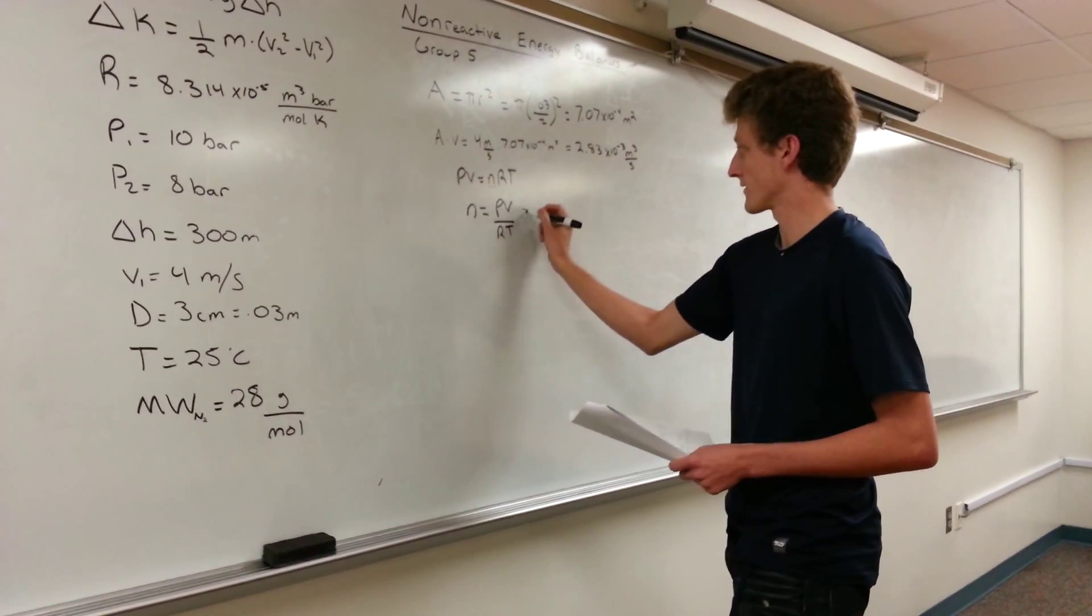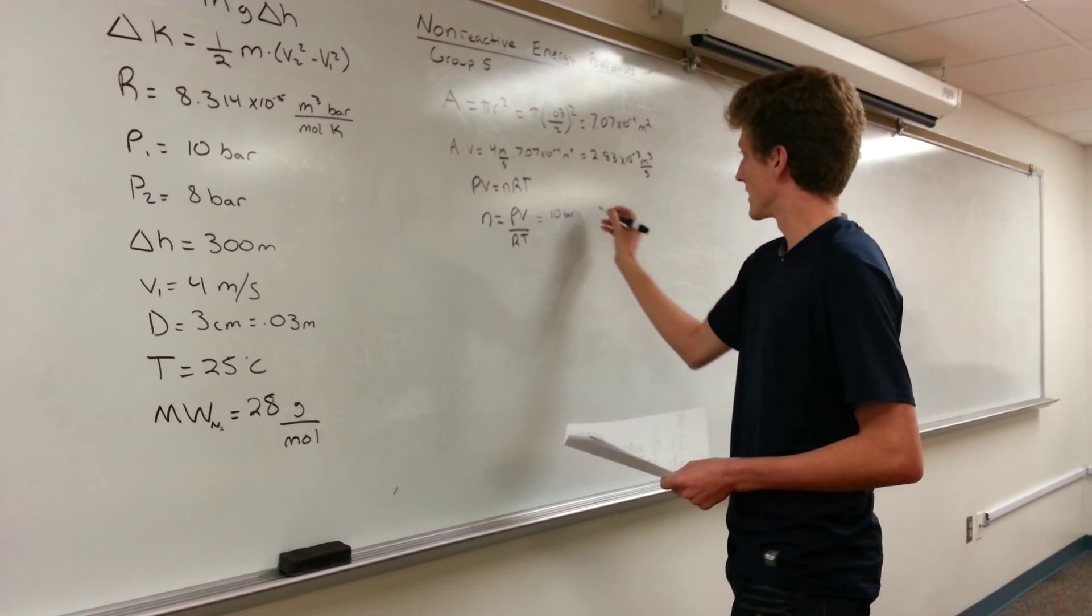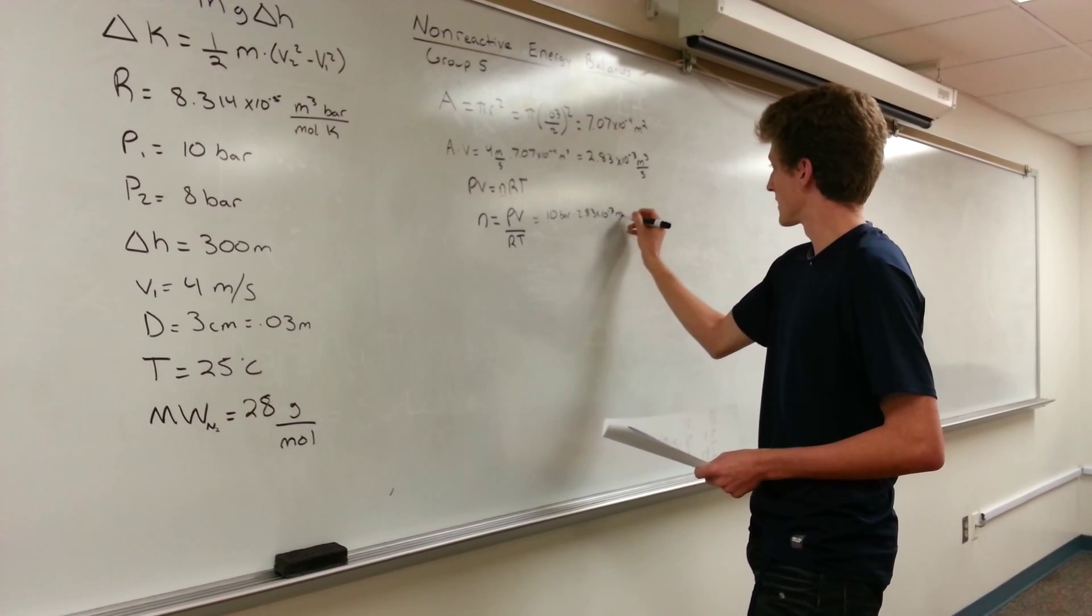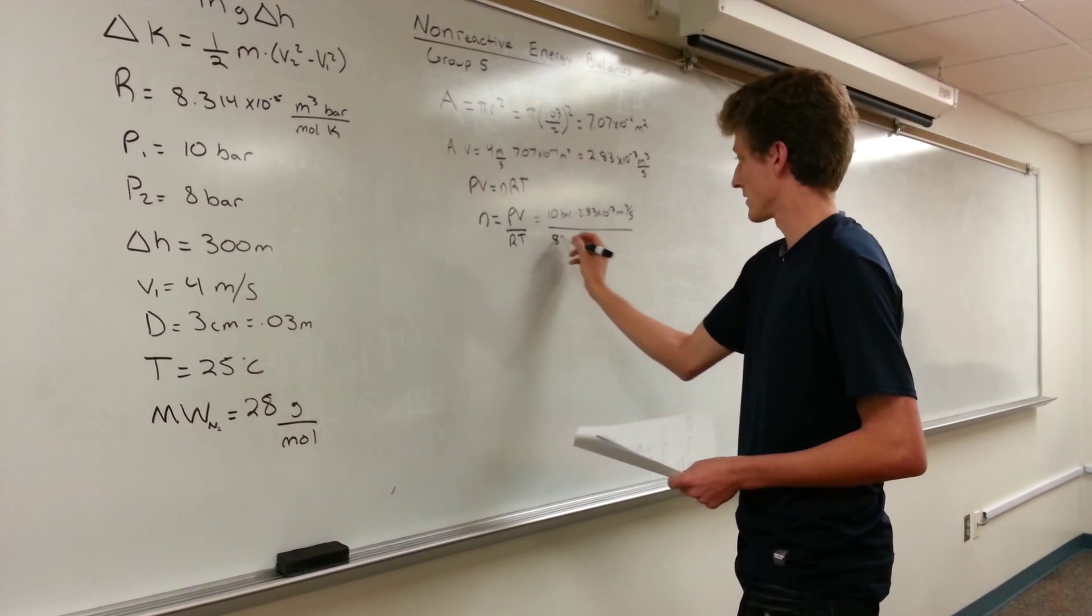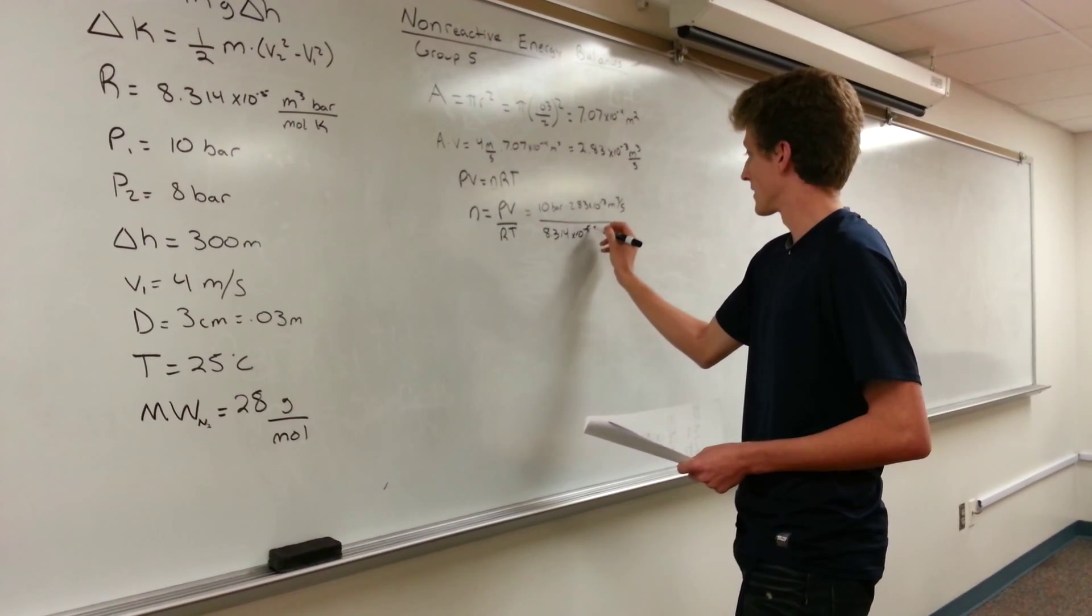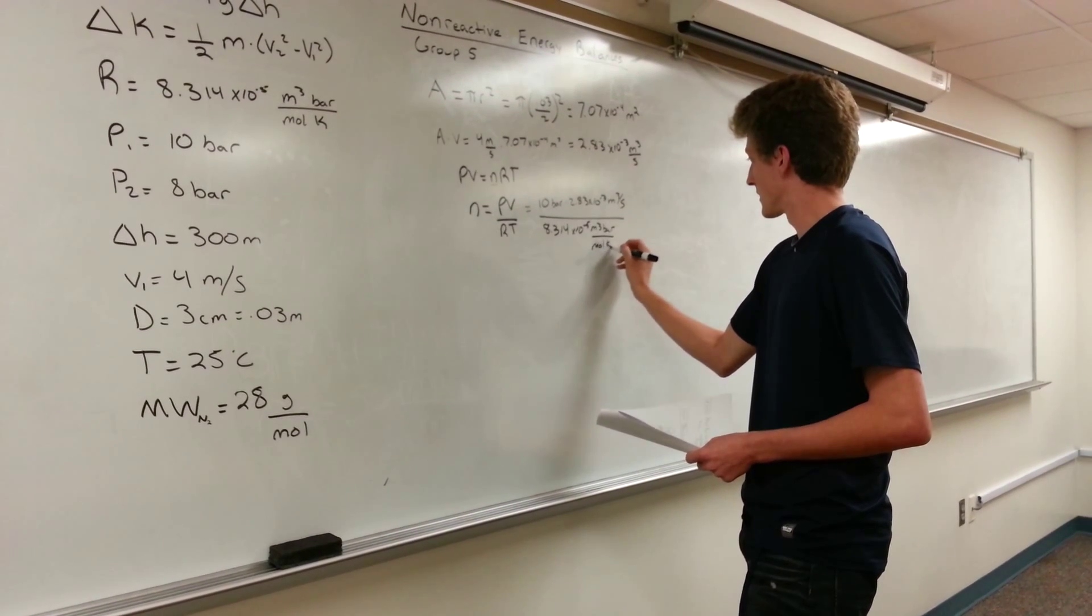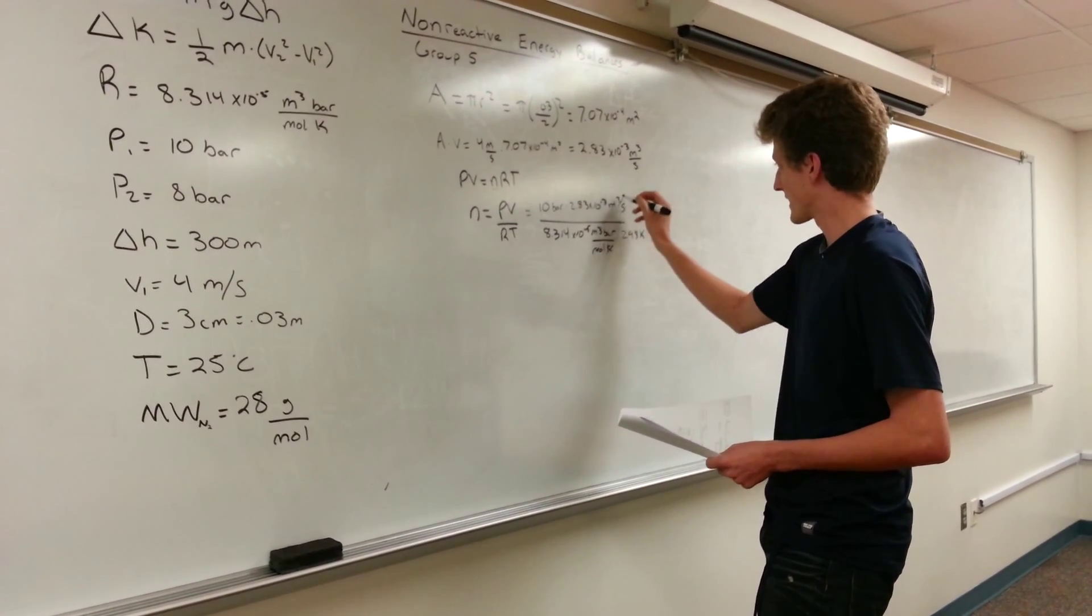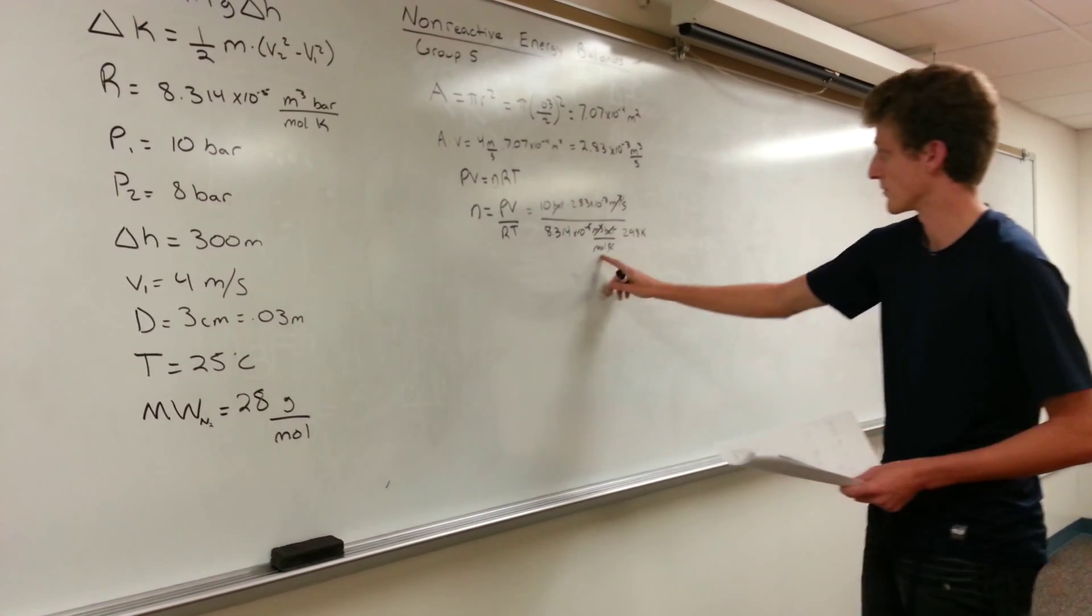When we plug in our initial values, we get 10 bar times our volumetric flow rate, divided by our gas constant times our temperature, which is 298 Kelvin. We cancel out the units and we end up with moles per second, that being 1.14 moles per second.